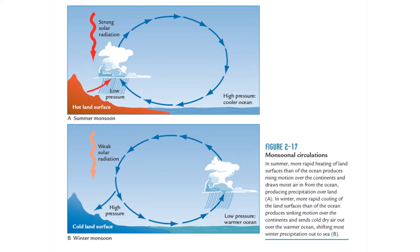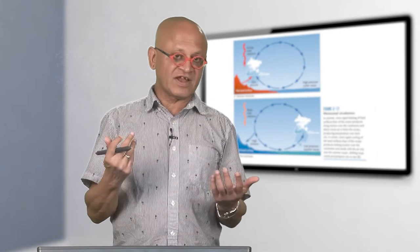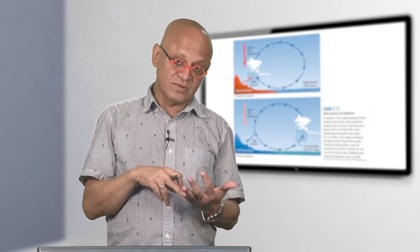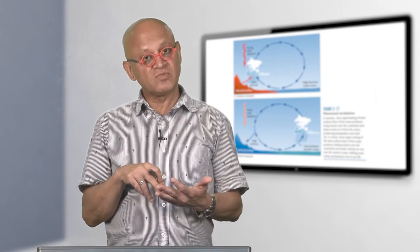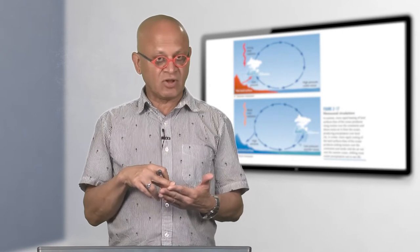In the winter season the opposite happens — the sun moves back toward the southern hemisphere, land cools faster than the ocean, pressure gradients reverse, and the winds reverse. India has both a summer monsoon (southwest monsoon) and a winter monsoon (northeast monsoon).